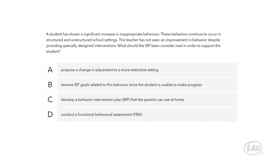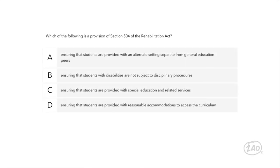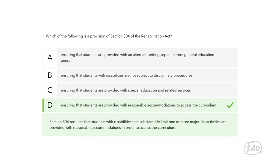Here's a question from the behavior and social skills competency. A student has shown a significant increase in inappropriate behaviors occurring in both structured and unstructured school settings, and the teacher has not seen improvement despite providing specially designed interventions. What should the IEP team consider next? It sounds like the student would benefit from a BIP, but an FBA should happen first — the function of the behavior must be determined before a plan is made to improve it. Regarding special education foundations: Section 504 of the Rehabilitation Act is another essential piece of legislation, and its key provision is ensuring students are provided with reasonable accommodations to access the curriculum.